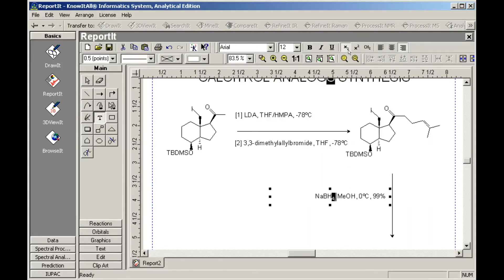We'll create the next structure by modifying an existing structure using the drawing tools found in the reported application. First, copy and paste the second structure and move the copy below the reaction arrow.